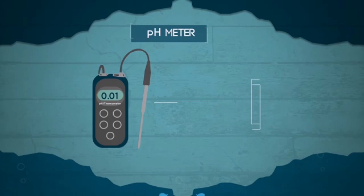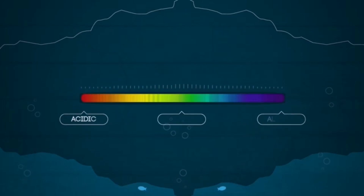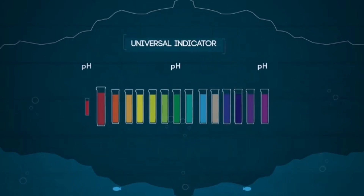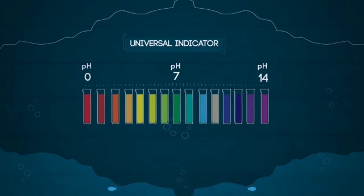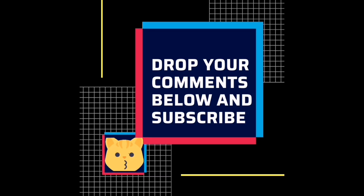This lesson showed that indicators can tell us whether something is acidic or alkaline, and how acidic or alkaline it is. Red litmus paper changes color for alkaline, and blue litmus paper changes color for acid. Universal indicator gives more detail, showing where on the 0 to 14 pH scale a solution falls — acids are 0 to 6, neutral is 7, and alkalis are 8 to 14.